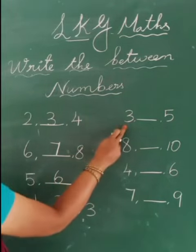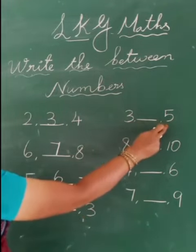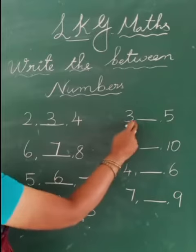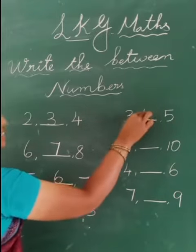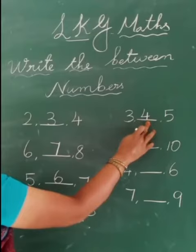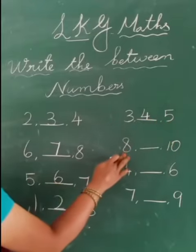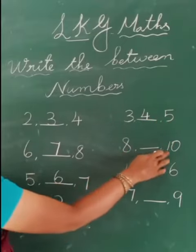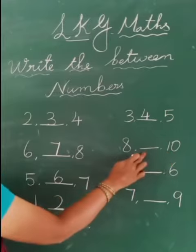Next one, 3 dash 5. 3. Yes, 4. What is the answer here? 4. 3, 4, 5. 8 dash 10. What will come here?